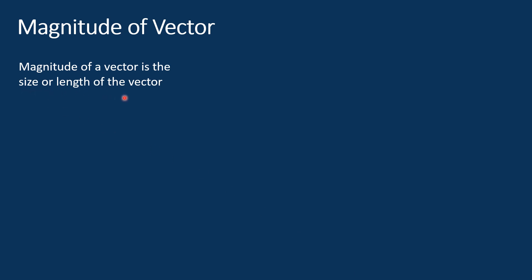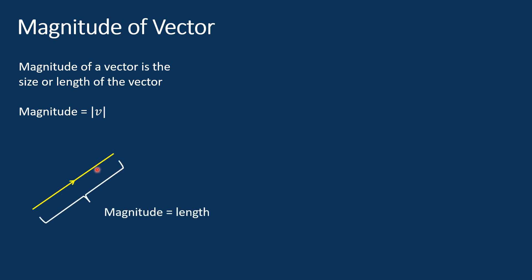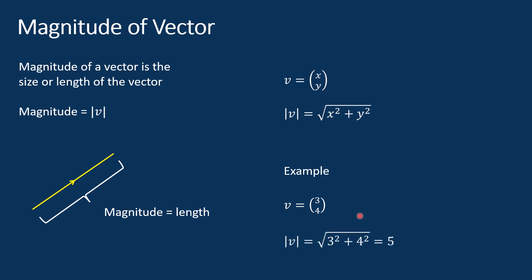Magnitude of vector. The magnitude of a vector is the size or length of the vector and is a scalar quantity. It is often denoted by modulus v, where v is the vector. In a vector diagram, the magnitude is equal to the length of the line representing the vector. To find the magnitude of a vector, we use the Pythagorean theorem. If a vector is represented by (x, y), then the magnitude is given by the square root of x² + y². For example, consider the vector v = (3, 4). The magnitude equals √(3² + 4²) = 5.